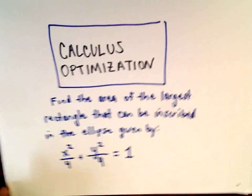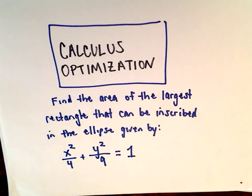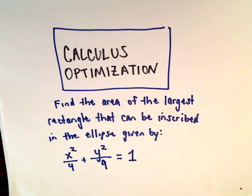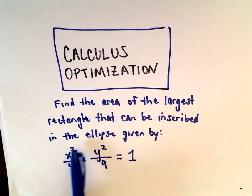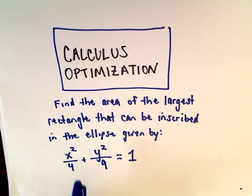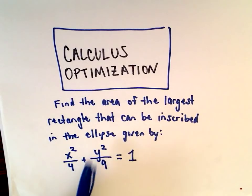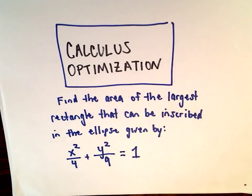In this example, we're going to do an optimization problem. We're going to find the area of the largest rectangle that can be inscribed in an ellipse. The ellipse equation is x²/4 + y²/9 = 1. This is a relatively common type of optimization problem you might see in a calculus course.